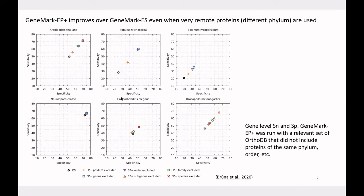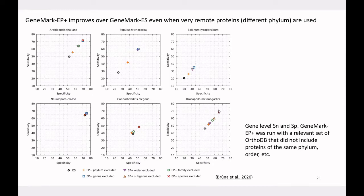Comparing prediction accuracy of GeneMark-ES (not using proteins) with GeneMark-EP+ (using protein information), and examining improvement relative to evolutionary distance of input proteins: even when proteins come from a different taxonomical phylum we still see significant improvement. As the evolutionary distance decreases, prediction accuracy gets better and better. If you use all available proteins except those from the species itself, you can achieve very high prediction accuracy compared to not using proteins at all.